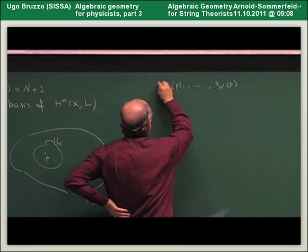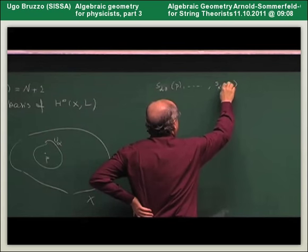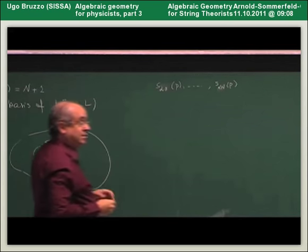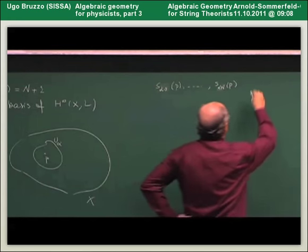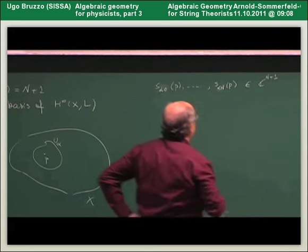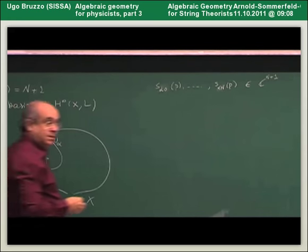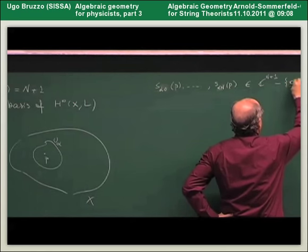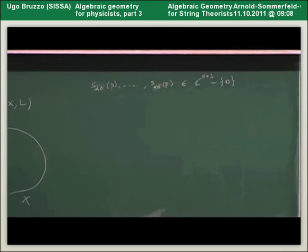The functions which represent these sections on the fixed trivialization over U alpha will be an element in C^{n+1}, but since the line bundle is base point free, this cannot be the zero point in this vector space — so this will be a non-zero element in C^{n+1}.